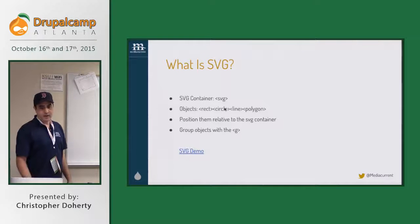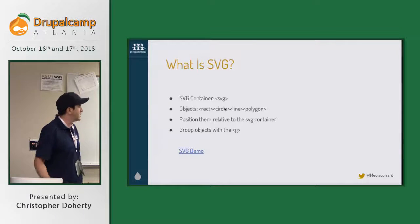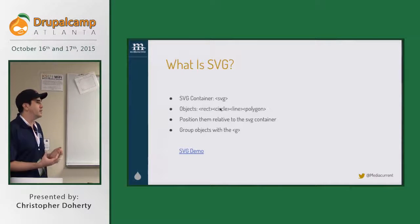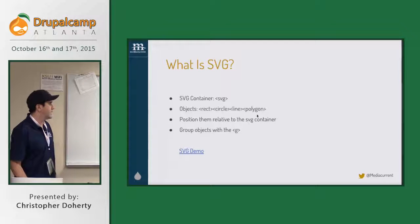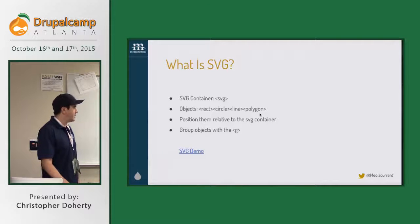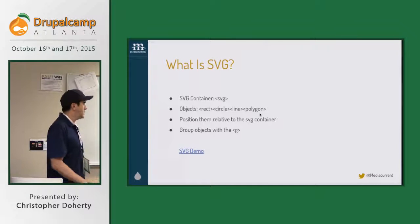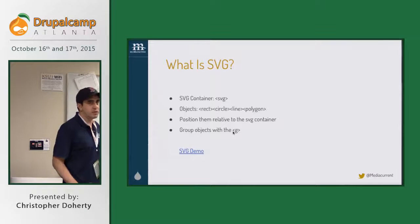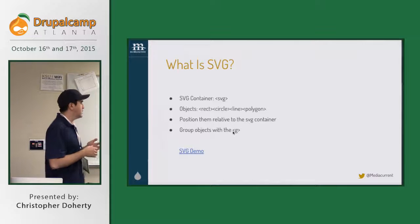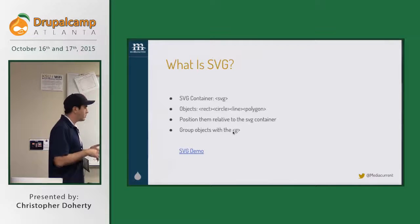Some of the elements of SVG: you have a container tag that looks like that. Then you can create objects — since it's a graphic, you can generate vector graphics. So a rectangle, a circle, line, polygon — this one's called a polyline also. You can position them within the SVG container: set a height and width for the container, and say I want this rectangle positioned at x-coordinate and y-coordinate, and it'll work.